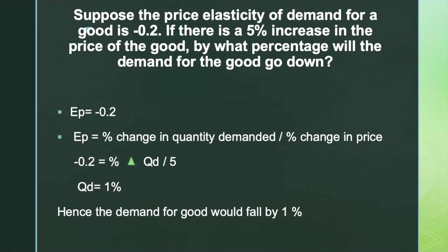We will solve one more question. Suppose the price elasticity of demand for a good is minus 0.2. If there is a 5% increase in price, by what percentage will the demand go down? Here EP is minus 0.2 and the percentage change in price is 5%. Since EP = %ΔQ / %ΔP, we get minus 0.2 = %ΔQ / 5, so %ΔQ = minus 0.2 × 5, which is minus 1. The demand for the good would fall by 1%.